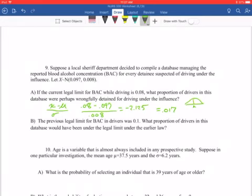Here's our higher mean, and then we're over two standard deviations, so we want to find this area to the left, and then we find out that that's 0.017 that were the proportion of drivers in the database that were wrongfully detained.